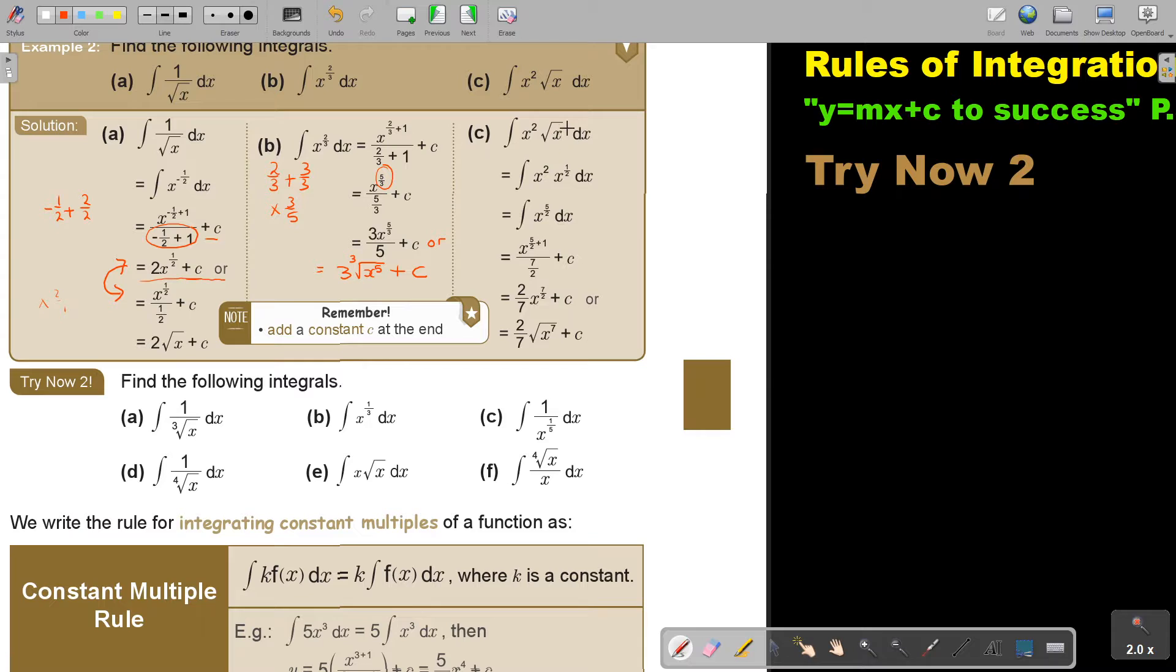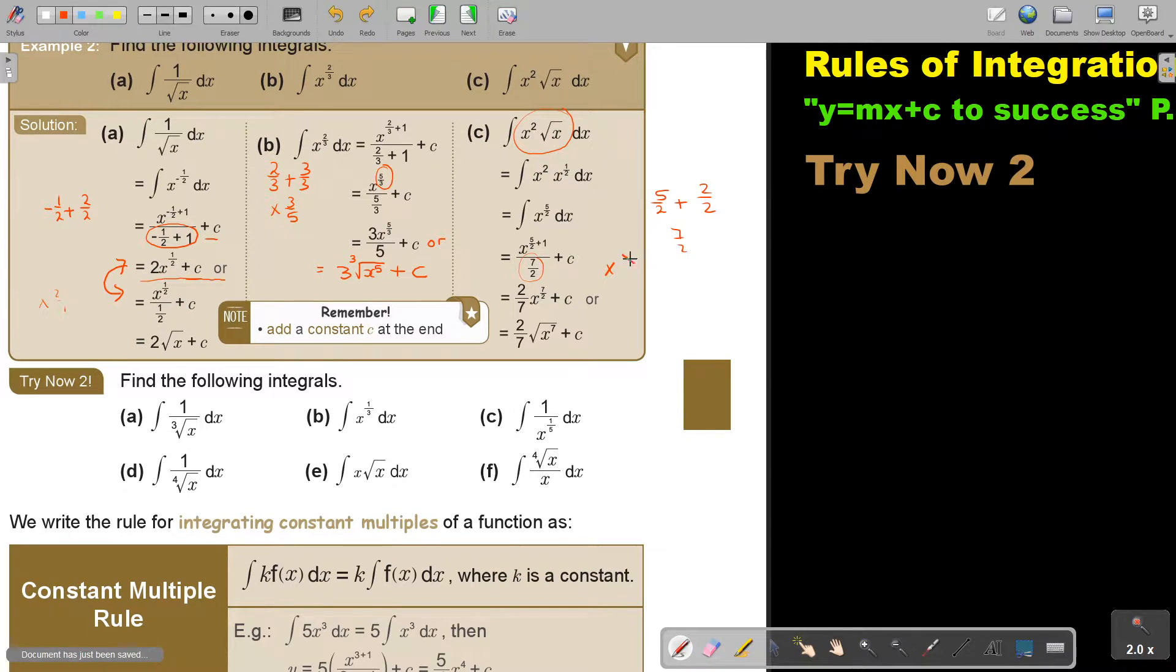And if you come to this one, don't forget to first simplify this. So get it out of the root, and then add your exponents. So it's 2 and a half or 5 over 2. That was 5 over 2. So plus that 1, 2 over 2, that will give you 7 over 2. That's why I divide by 7 over 2. And don't forget to multiply by that reciprocal, which is then 2 over 7.